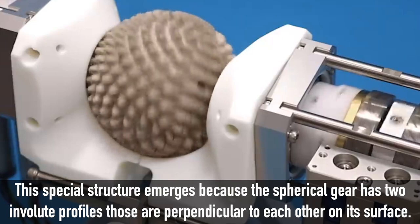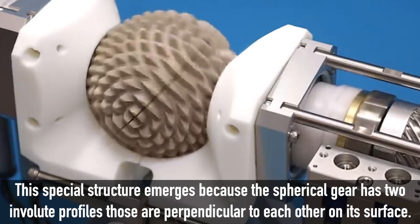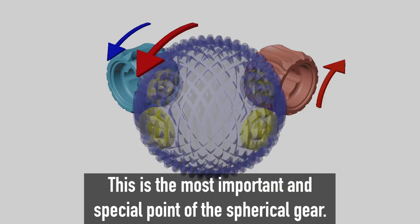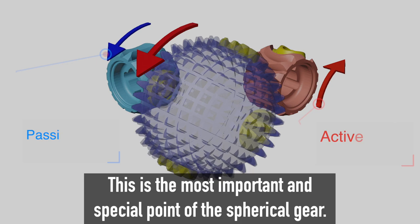This special structure emerges because the spherical gear has two involute profiles that are perpendicular to each other on its surface. The pole of the spherical gear and the pole of the monopole gear always mesh each other at the same time.